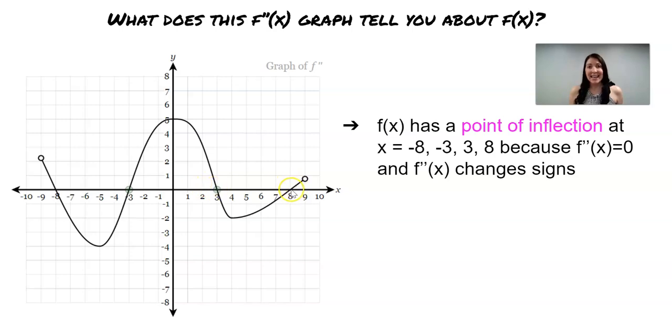positive 3, and 8. And that's because you can see at each of those four x values, the f''(x) graph, which is what this graph is, is equal to 0 and it crosses over the x-axis, which means the f''(x) graph changes signs.